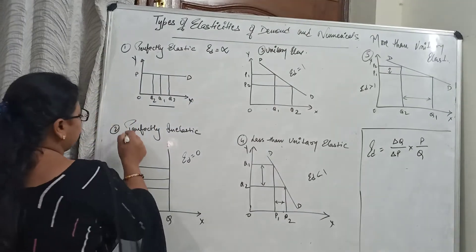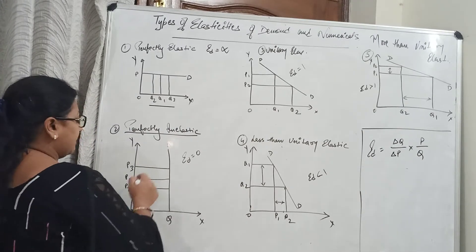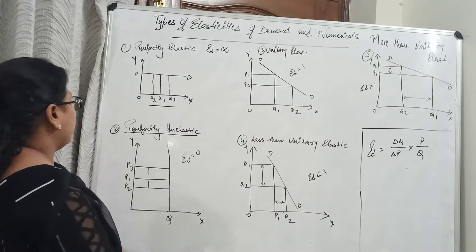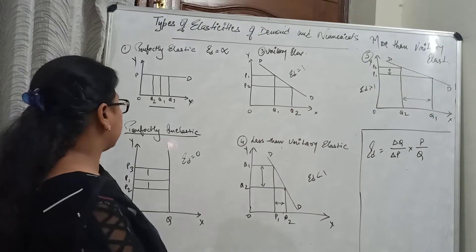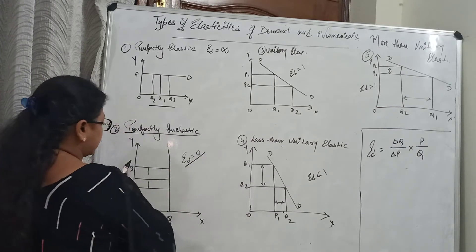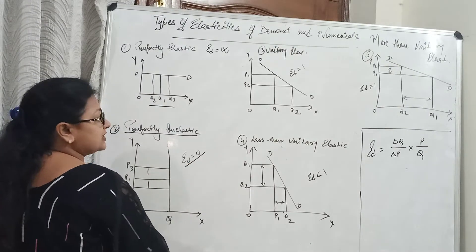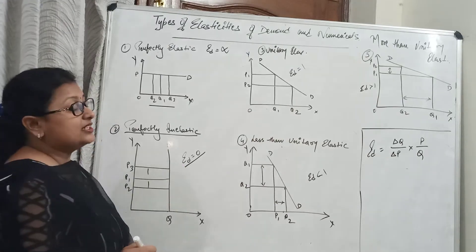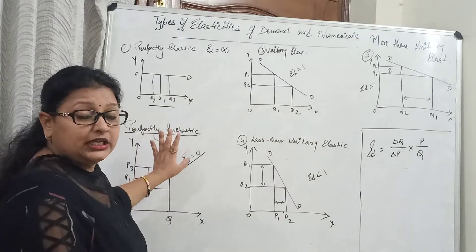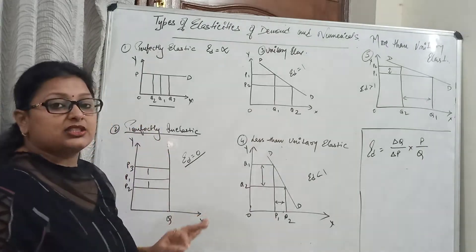Now we will see perfectly inelastic demand. These are goods where the price changes but the demand is constant. The demand remains constant even as price changes, so elasticity of demand is zero. I will tell you that both perfectly elastic and perfectly inelastic are imaginary cases in economics because there are no real-world examples for them. These are purely imaginary cases.